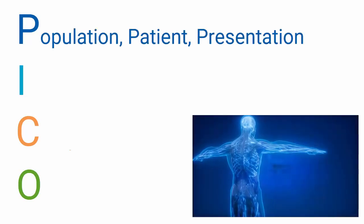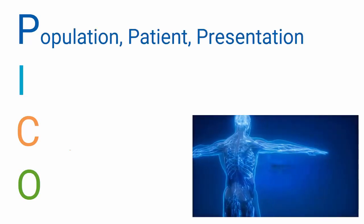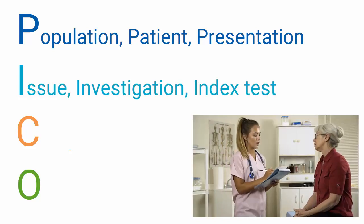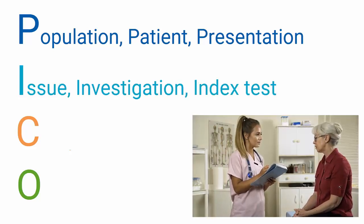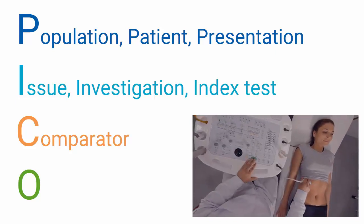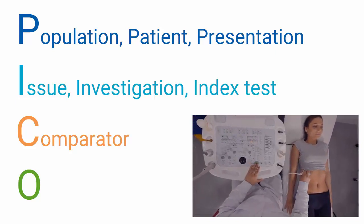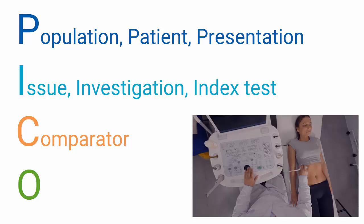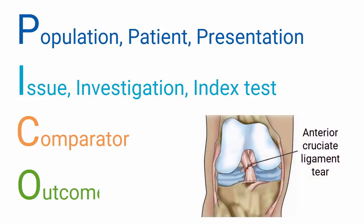A good memory aid for asking questions is PICO. For questions about diagnosis, P stands for population, patient, or presentation. I stands for issue, investigation, or index test. C stands for comparator — the reference test that will be used to determine the index test's accuracy. And O stands for outcome, which means the diagnosis that we would like to confirm or rule out with the index test.